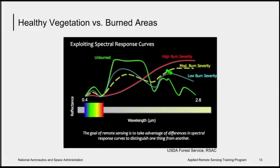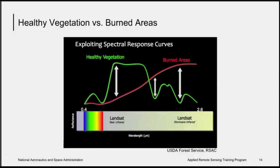The low severity is in light blue, the moderate is in yellow, and the red is high burn severity. To assess the severity of the fire, you can compare how the spectral signatures of the burned areas compare to spectral signatures of healthy vegetation. Creating burn severity maps exploits the differences between healthy vegetation and burned areas in specific wavelengths — the largest differences occur in the near-infrared and the short-wave infrared wavelengths. In the near-infrared, healthy vegetation has much higher reflectance than burned areas, while in the short-wave infrared, burned areas have higher reflectance.